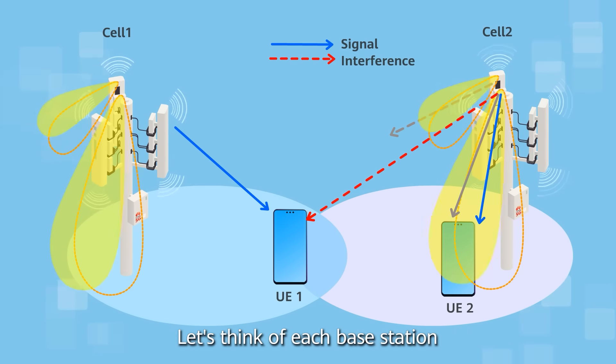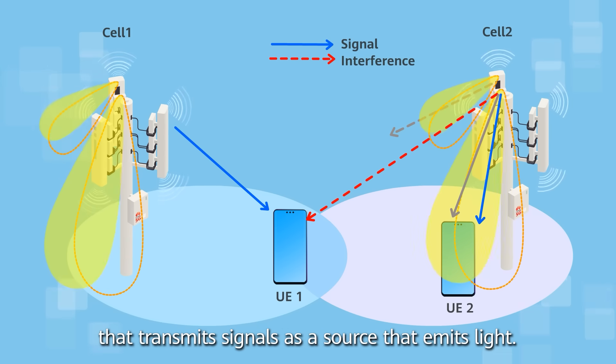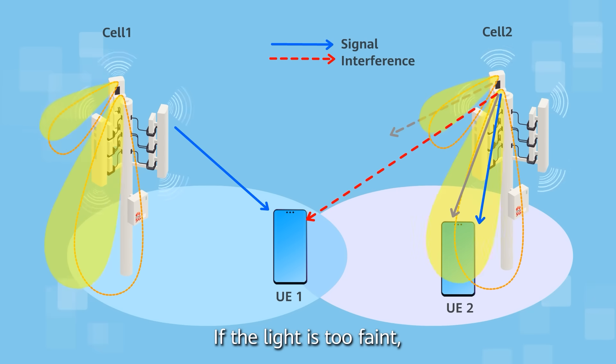Let's think of each base station that transmits signals as a source that emits light. If the light is too faint, one can hardly see it. If the light is bright enough but comes from multiple sources, it will be difficult to identify the exact source.